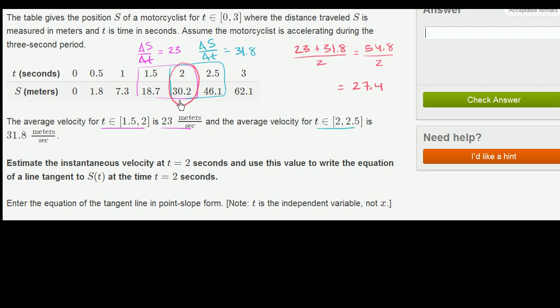So we can use that as our approximation for the instantaneous rate of change, the slope of the tangent line. Now we have to figure out what that equation actually is. They don't just want the slope. They want it in point-slope form, and they remind us that t is the independent variable. When you're putting something in point-slope form, it really just comes out of the definition of a line. A line always has a constant slope.